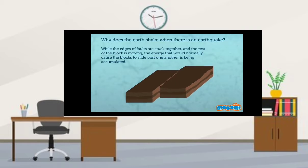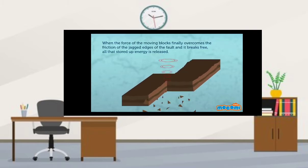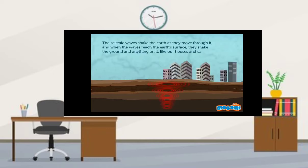While the edges of the faults are stuck together and the rest of the block is moving, the energy that would normally cause the blocks to slide past one another is being accumulated. When the force of the moving blocks finally overcomes the friction of the jagged edges of the fault, it breaks free, and all that stored up energy is released. The seismic waves shake the earth as they move through it, and when the waves reach the earth's surface, they shake the ground and anything on it, like our houses and us.